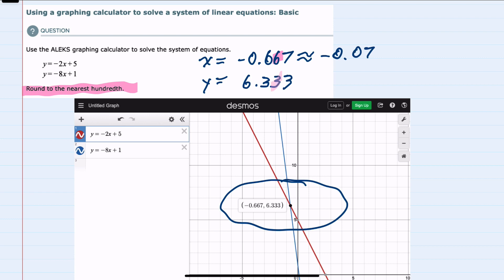And then looking at the hundredth place for the y value, this time it's followed by a 3, so I won't round up. I'll leave that 3 in the hundredth place as a 3. So this would round to 6.33.